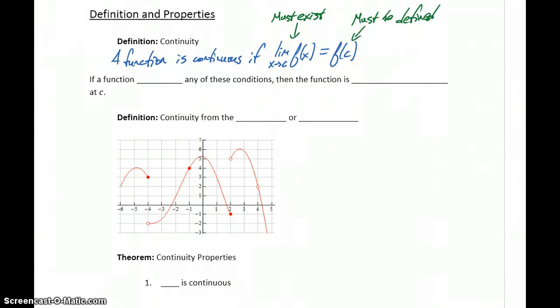And our function value at C must be defined. So if we want to determine whether a function is continuous at some given point C, we need to evaluate the limit as X approaches C. That limit must exist as some real number, the function must be defined there, and those two values must be exactly equal to each other.